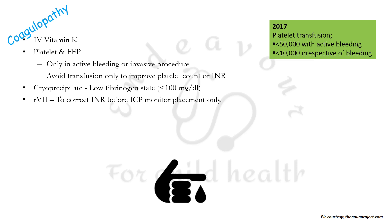Cryoprecipitate should be used in low fibrinogen states where serum fibrinogen is less than 100 mg per deciliter. Recombinant factor 7 should be used to correct INR before ICP monitor placement only, as it is expensive and carries the risk of thrombosis.